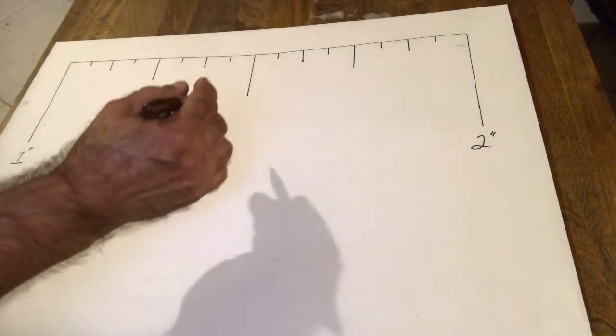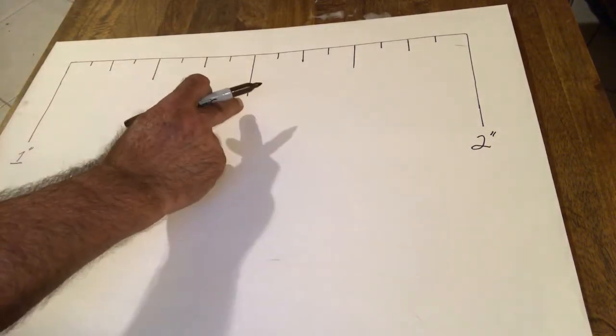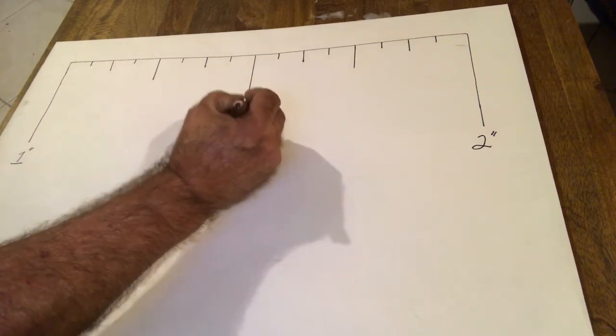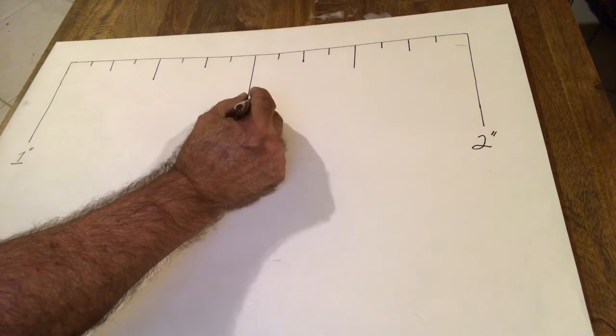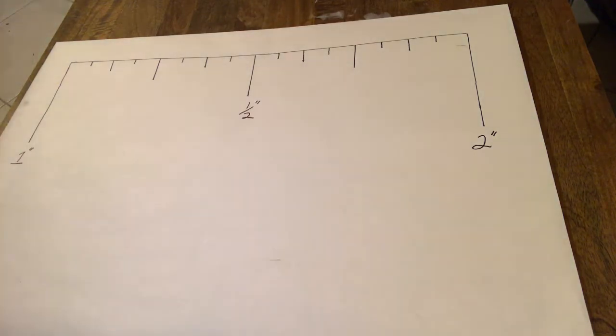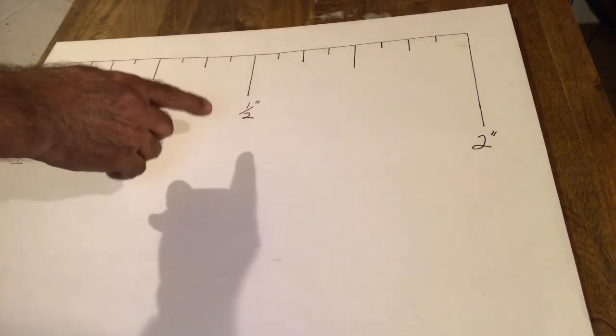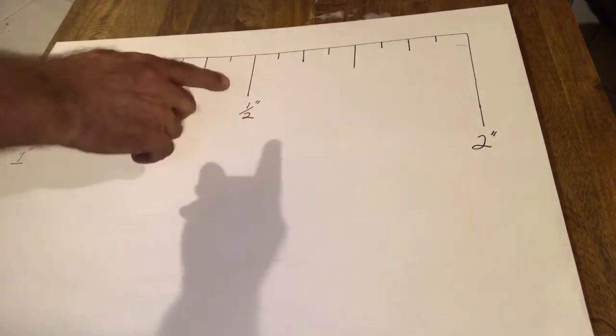your next longest tick mark is here. It's called the half-inch. So, you have your inch mark is your longer tick mark. Your next tick mark, longest one, in between there, is your half-inch.